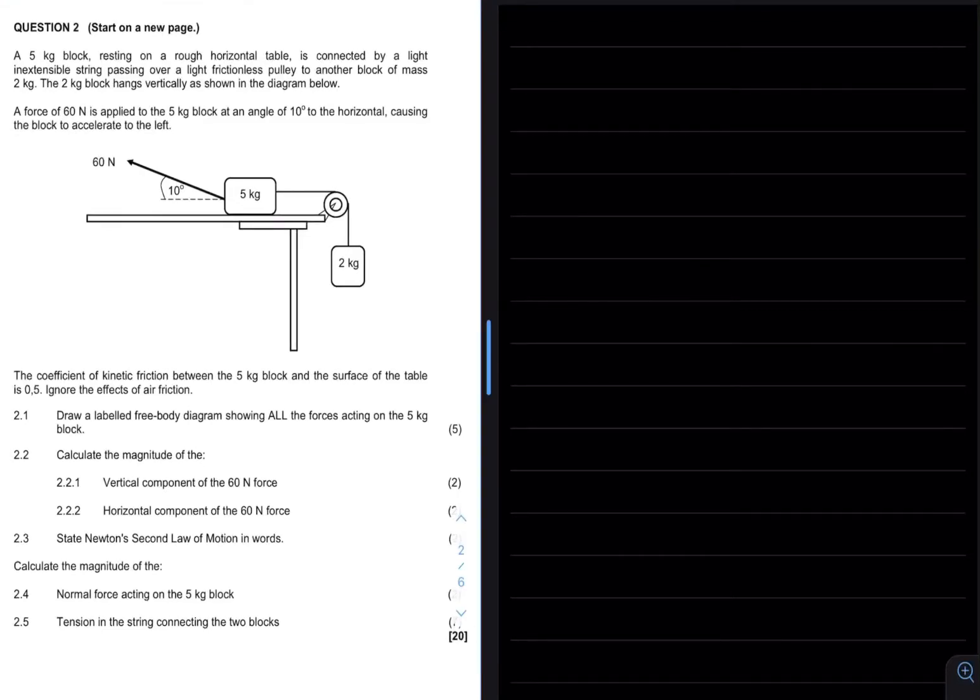In the next exam question we have a 5kg block resting on a rough horizontal table. It is connected by a light inextensible string passing over a light frictionless pulley to another block of mass 2kg. The 2kg block hangs vertically as shown in the diagram. A force of 60 Newton is applied to the 5kg block at an angle of 10 degrees to the horizontal causing the block to accelerate to the left.